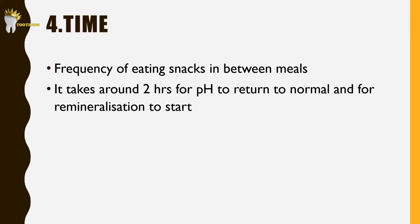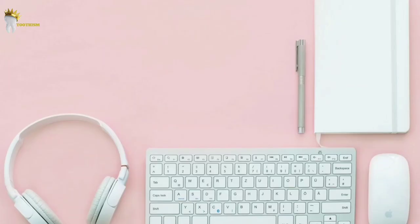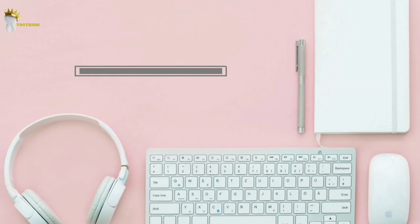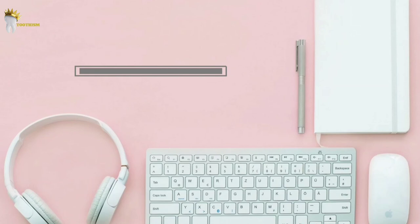The fourth factor is time — how often you eat sugary foods. The pH drops when bacteria produce acid after sugar-rich food intake, and it takes around 2 hours for pH to return to normal and remineralization to start. So increased frequency of eating sugar-containing foods leads to increased caries incidence. In summary, for caries to form there are four factors: host factors, microflora, diet, and time. In the next video we will learn more about how caries develop and progress through enamel and dentine. If you like this video, give it a thumbs up, subscribe, and share with your friends.